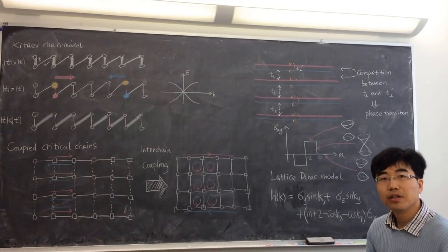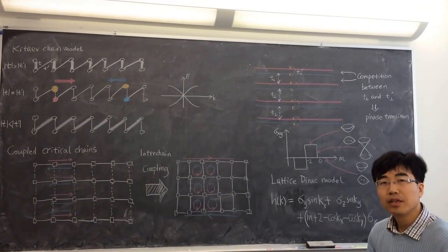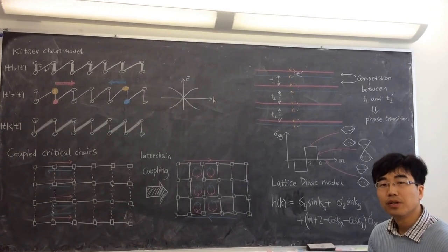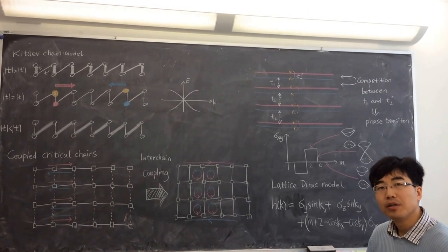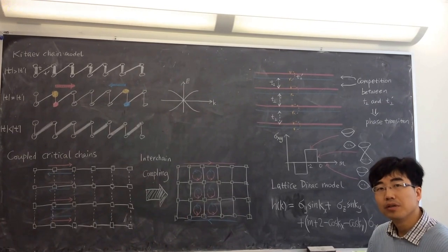So now you have learned how this Kitaev chain is related to the lattice quantum Hall model, which we call the quantum anomalous Hall state.